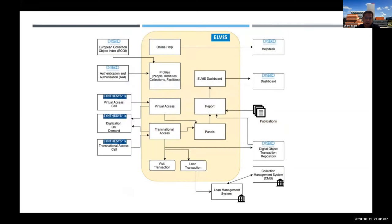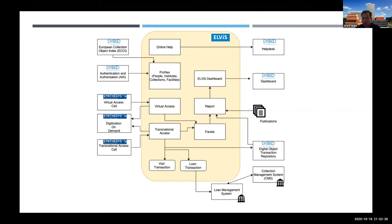ELVIS is envisioned as a service — part of an ecosystem in the DISCO project — interacting with other components: a collection catalog, authorization/authentication system, digitization on demand, dashboards, help desk, and value-added services tracking publications coming out of research, visits, and loans. Organizations can either migrate to ELVIS or connect through APIs to take advantage of value-added services from their current loan management and collection management systems — a both top-down and bottom-up approach.